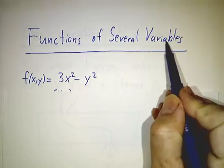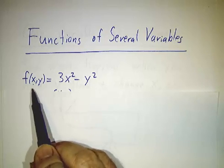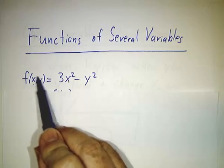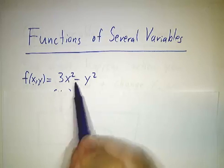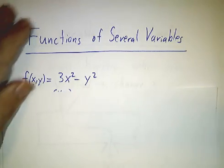You can have a function of several variables where there are two variables as the input or three variables as the input or 17 variables as the input and one variable as the output. So here you tell me what x and y is and I'll tell you what f of x, y is. It happens to be given by the formula 3x squared minus y squared.